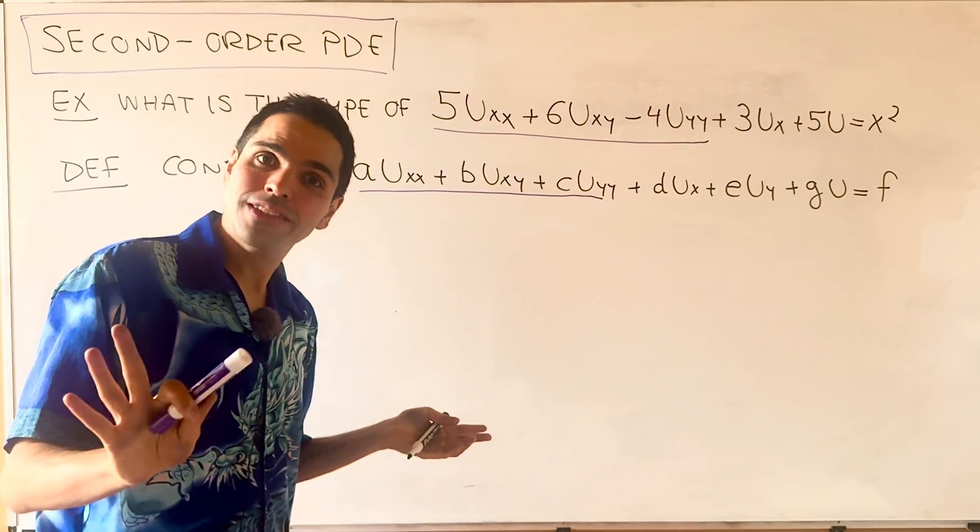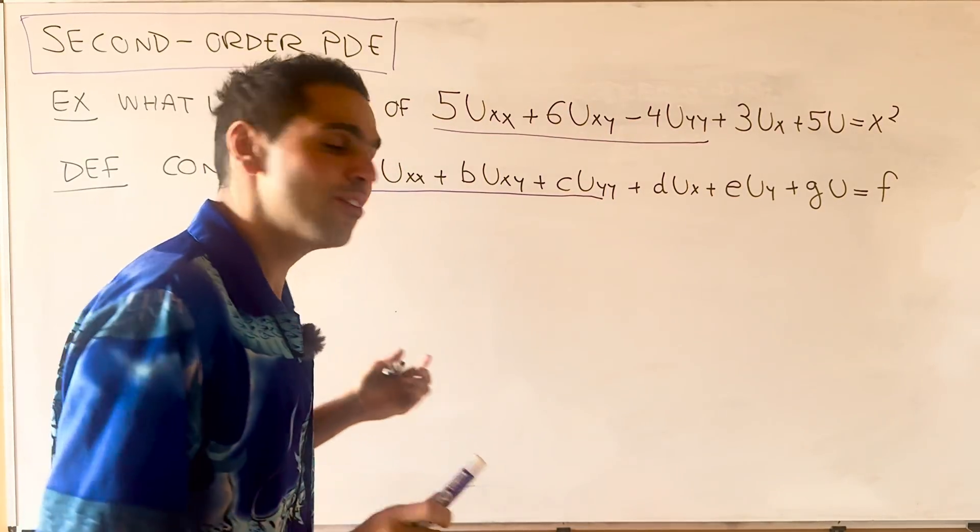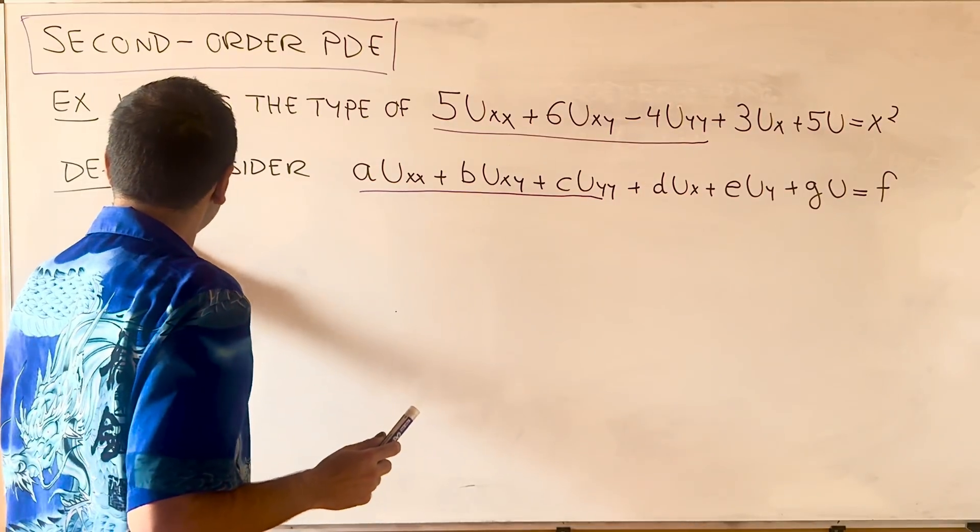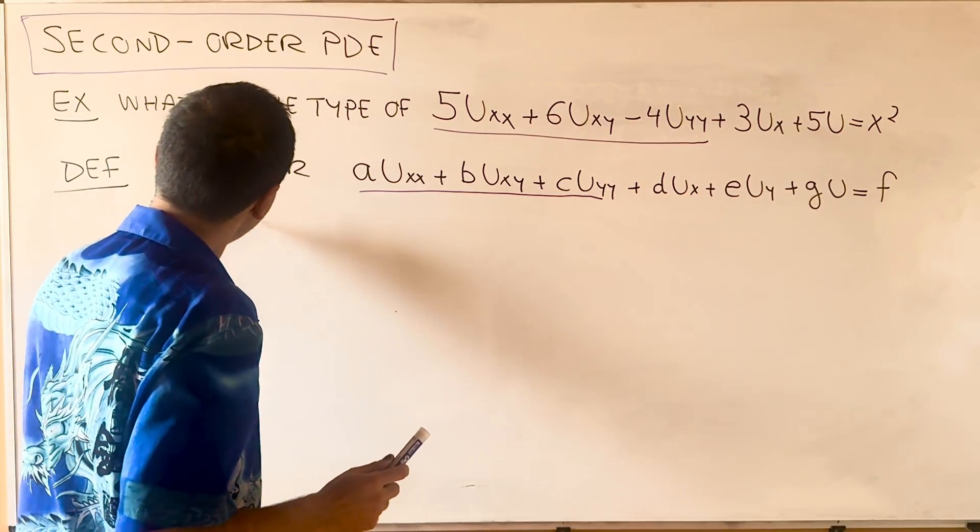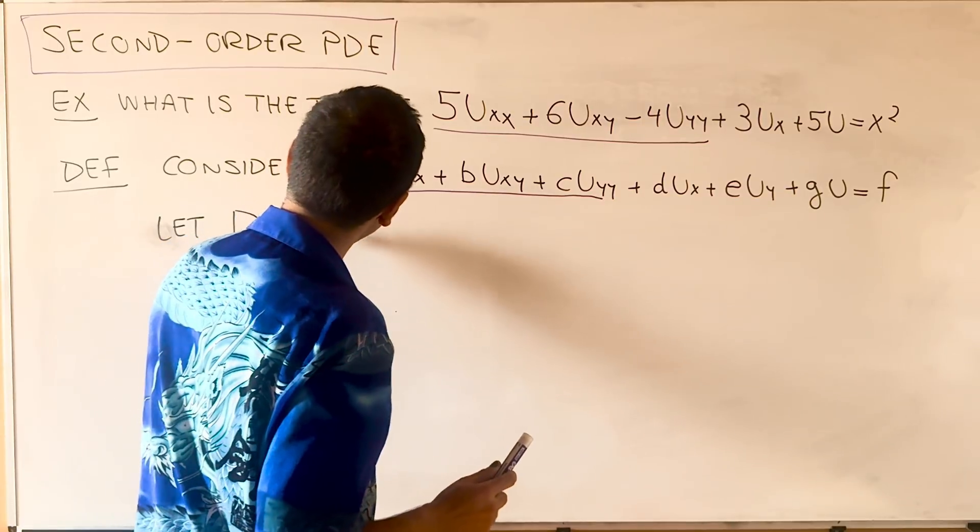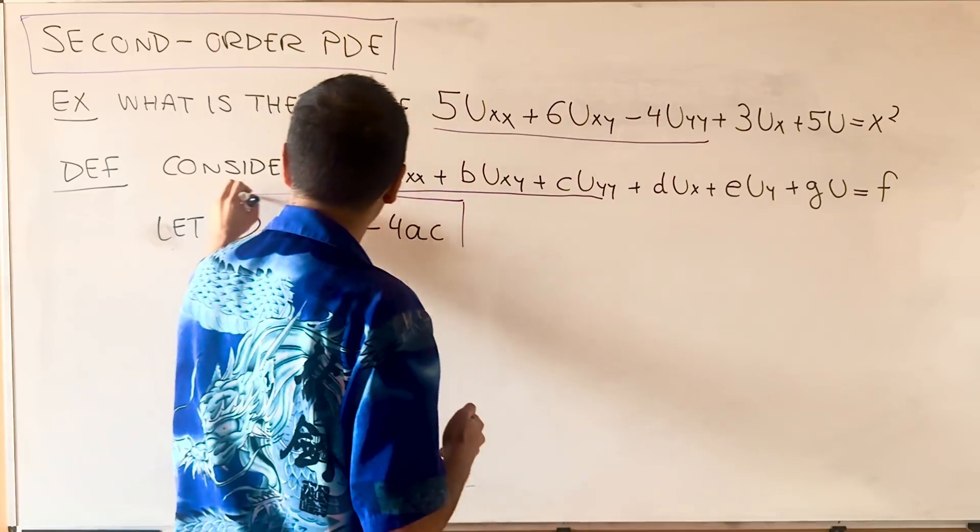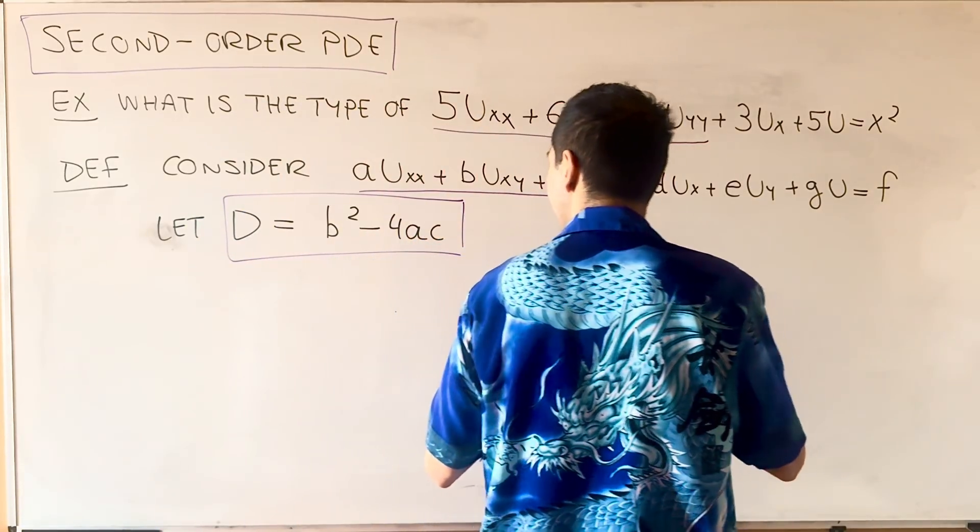which is precisely the discriminant for quadratic equations. Let D be B² minus 4AC. Yes, that is the discriminant.